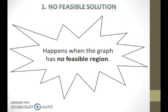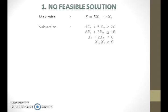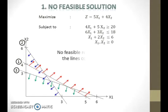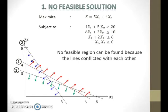No feasible solution happens when the graph has no feasible region. Suppose we want to solve this linear programming model using the graphical method. We first draw the graph and then identify the feasible region. Note that no feasible region can be found because the lines conflict with each other. Therefore, the model has no feasible solution.